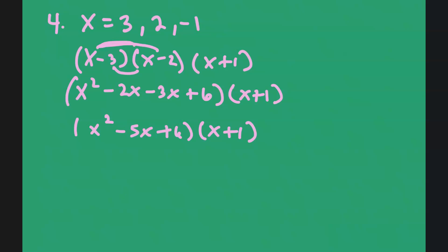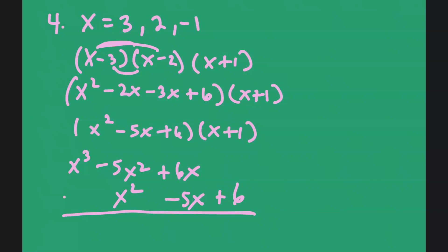Multiplying x times x squared gives x to the third power. x times negative 5x gives negative 5x squared. x times 6 gives 6x. 1 times x squared gives x squared. 1 times negative 5 gives negative 5x. 1 times 6 gives 6. Combining like terms: x to the third power minus 4x squared plus x plus 6.